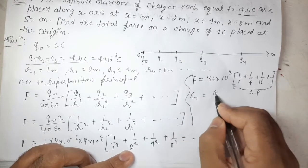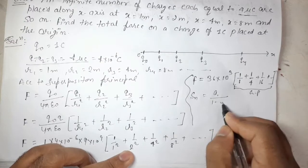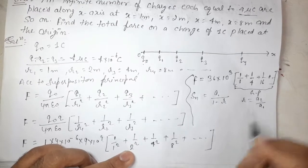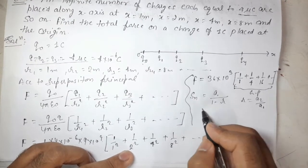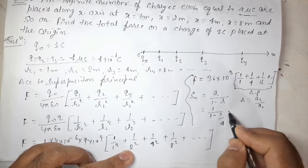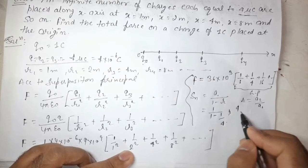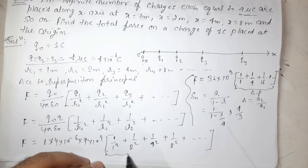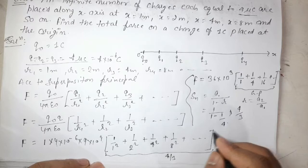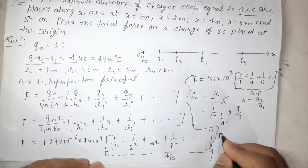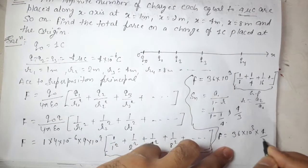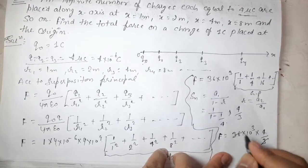The sum of the GP equals 1 / (1 − 1/4) = 1 / (3/4) = 4/3. Substituting this back: F_net = 36 × 10³ × 4/3. The 3s cancel, giving 12 × 4 × 10³ = 4.8 × 10⁴ Newton.